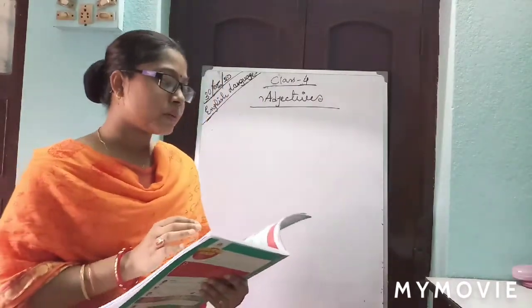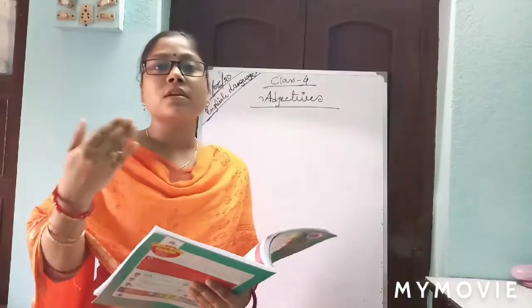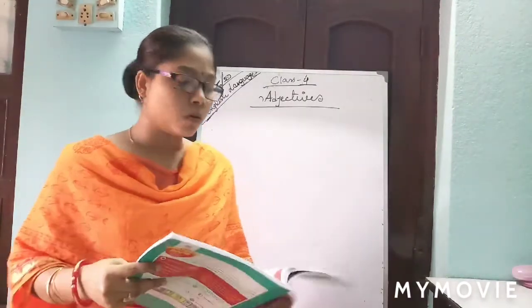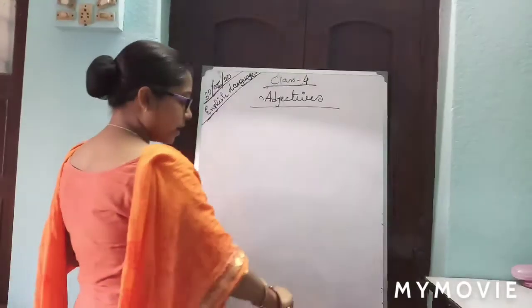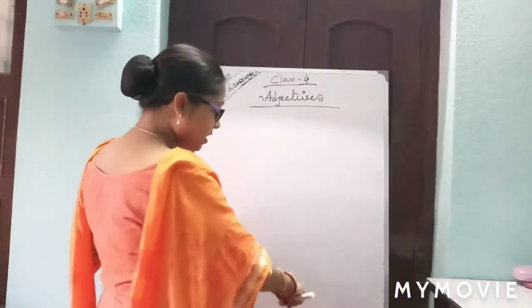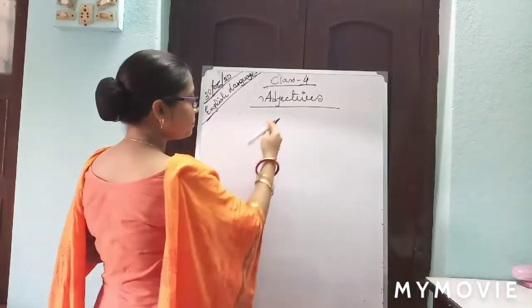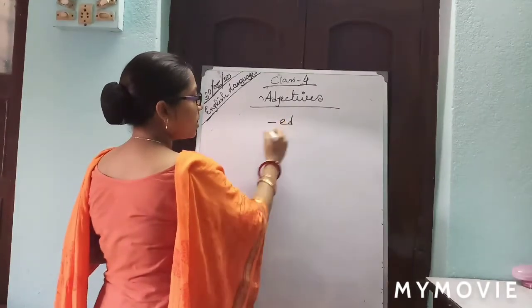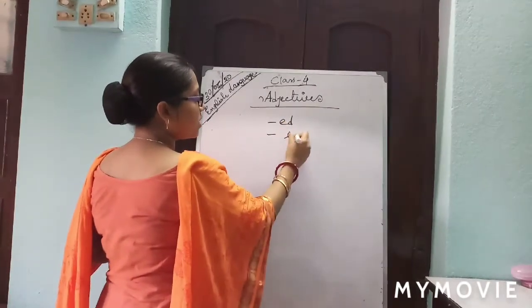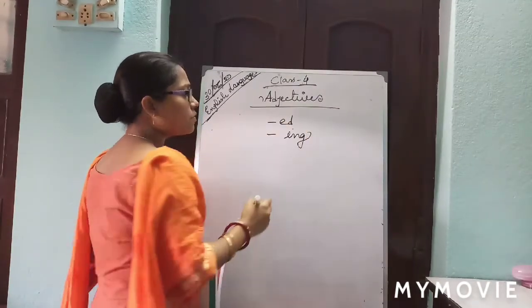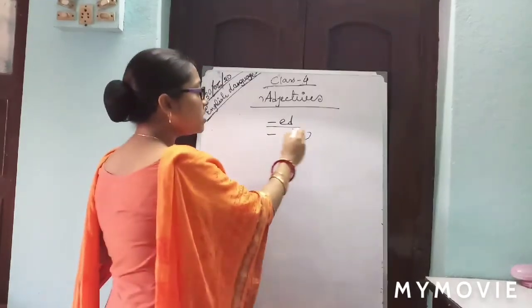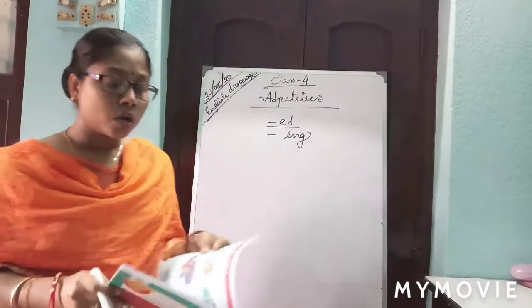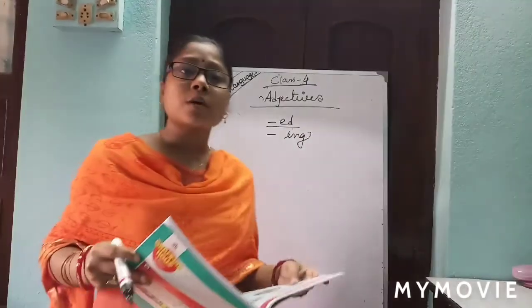Now, can you see page number 38 — Learning with Ladybird? Here, some different types of adjectives are given. Notice that at the end we are using '-ed' and another one '-ing'.